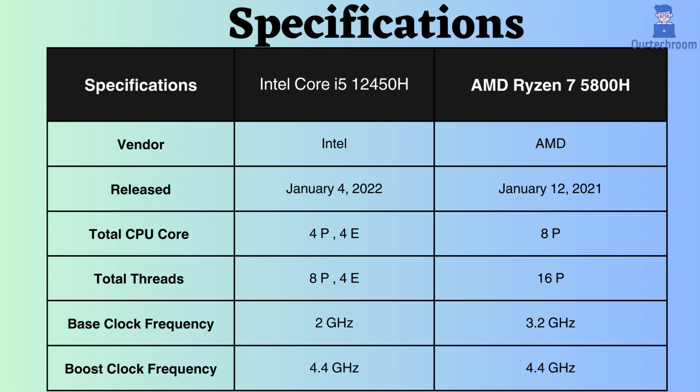Examining the base clock frequencies reveals that the Intel 12450H operates at 2 GHz, whereas the Ryzen 5800H boasts a base clock speed of 3.2 GHz. Consequently, the Ryzen 5800H may exhibit superior performance in certain lightly threaded tasks due to its higher base clock speed. The boost clock frequency of both processors is 4.4 GHz.